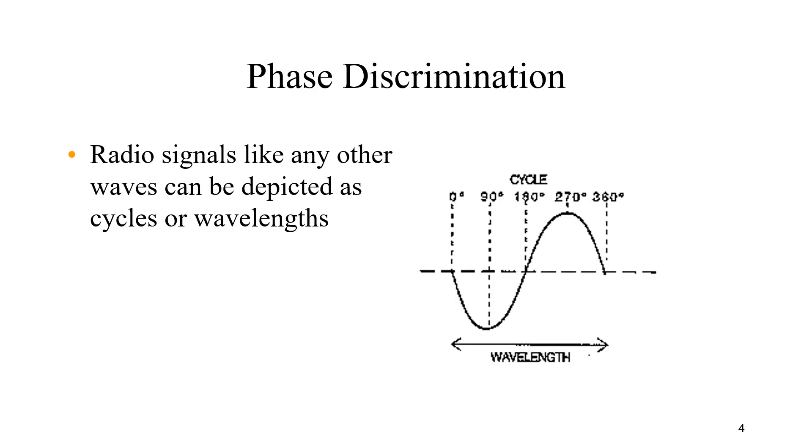By definition, the locus of points with the constant difference in distance from two reference points is a hyperbola, and measurement of constant time differences and hence constant distance differences places the receiver on a hyperbolic line of position.